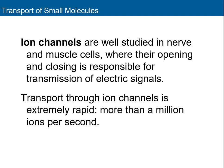Ion channels are important for the function of any cell type. They are well-studied in neurons and muscle cells because the opening and closing of ion channels is responsible for generating an action potential — and for the ability of these cells to transmit electrical signals. Transport through ion channels is extremely rapid: more than a million ions per second can move through, causing rapid changes in membrane potential.